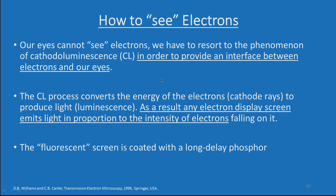How do we see electrons? You have to remember that what we are seeing in an electron microscope is a beam of electrons — our eyes cannot see electrons. We have to resort to the phenomenon of cathodoluminescence to provide an interface between electrons and our eyes. The cathodoluminescence process converts the energy of the electrons, that is cathode rays, to produce light luminescence.